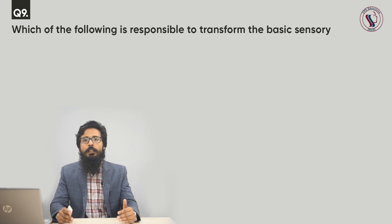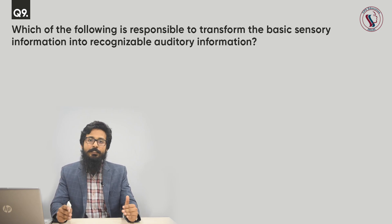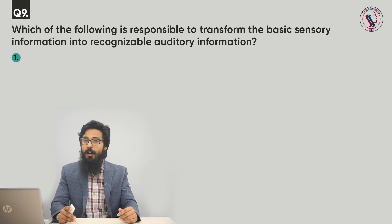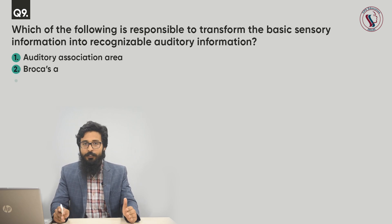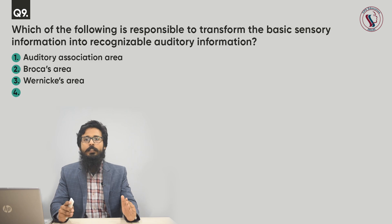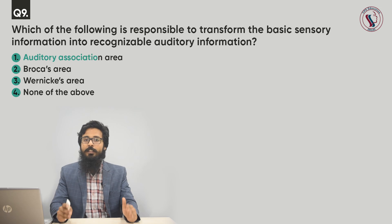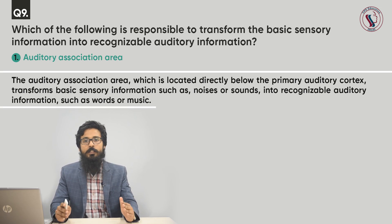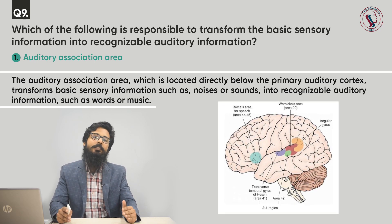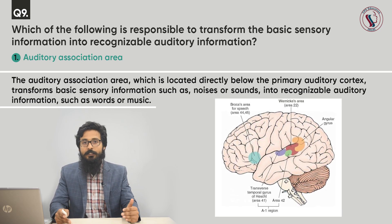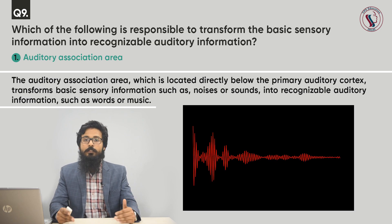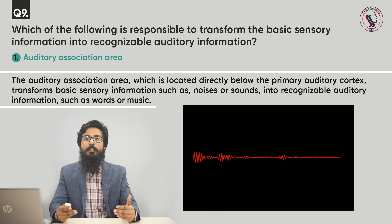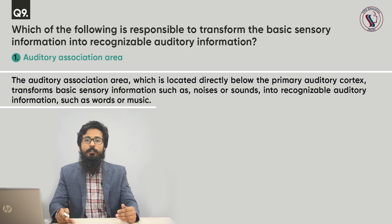Question number nine. Which of the following areas transforms basic sensory information into recognizable auditory information? Options: auditory association area, Broca's area, Wernicke's area, and none of the above. The correct answer is the auditory association area, because it is located directly below the primary auditory cortex and transforms basic sensory information such as noise or sound into recognizable auditory information such as words or music.